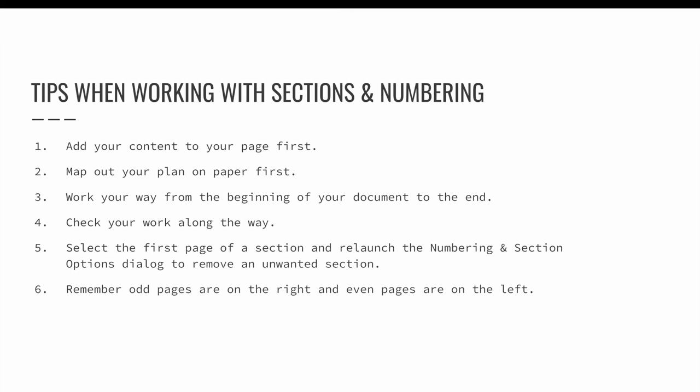It is a good idea to keep your sections as simple as possible when you are learning how to create sections and adjust document numbering — things can get out of hand really quickly. I recommend the following basic tips: First, add your content to your pages so you can see exactly where a new section starts. Two, map out your plan on paper first so that you truly understand exactly what you are trying to do. Three, work your way from the beginning of your document to the end because your changes will flow downhill. Four, check your work along the way — you don't want to get to section 10 and realize that you did something wrong in section 3.